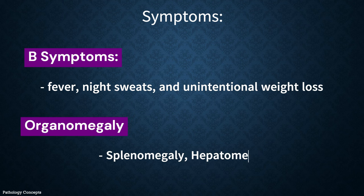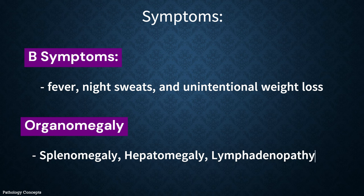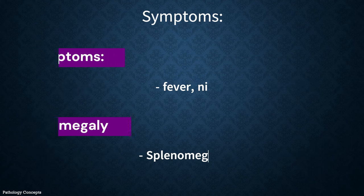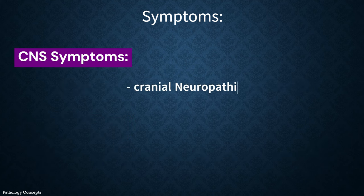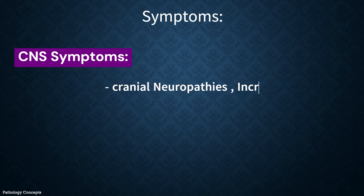Hepatomegaly, splenomegaly, and lymphadenopathy can be seen in up to half of adults on presentation. CNS involvement is common and can be accompanied by cranial neuropathies or symptoms related to increased intracranial pressure.